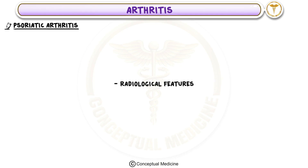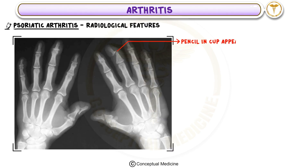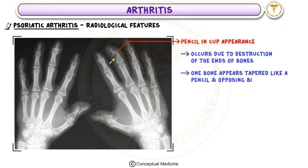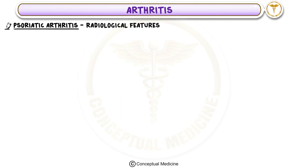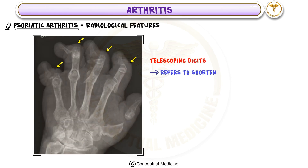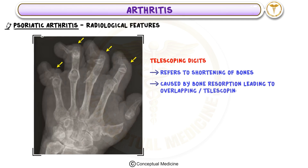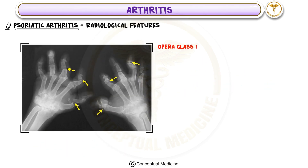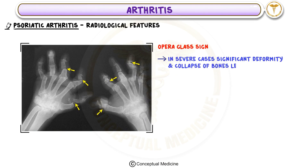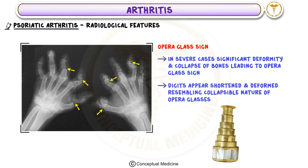Radiological Features of Psoriatic Arthritis: On imaging, psoriatic arthritis has unique and striking features. First, the pencil-and-cup appearance occurs due to destruction of the bone ends, where one bone appears tapered like a pencil and the opposing bone looks like a cup. Second, telescoping digits refers to shortening of bones caused by bone resorption, leading to overlapping of affected digits. Third, the opera glass sign describes significant deformity and collapse of bones in severe cases, with digits appearing shortened and deformed.